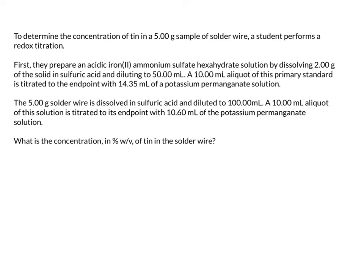In this problem, to determine the concentration of tin in a five gram sample of solder wire, a student performs a redox titration. That's our end goal — to determine the concentration of tin. First they prepare an acidic iron(II) ammonium sulfate hexahydrate solution. That compound contains two ammoniums, two sulfates, and six waters — that's where the hexahydrate comes from. We prepare an acidic solution by dissolving two grams of the solid in sulfuric acid and diluting to 50 milliliters.